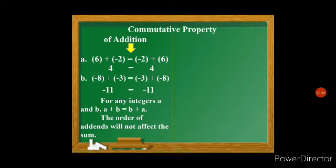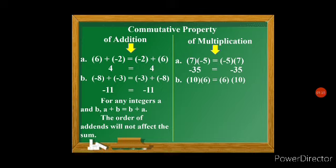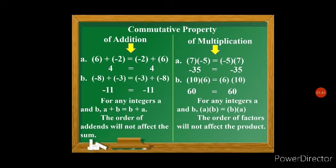For commutative property of multiplication: 7 times negative 5 equals negative 5 times 7, both equal negative 35. Note that when multiplying two integers with unlike signs, the answer is negative. And positive 10 times positive 6 equals 6 times 10, both equal 60, since both are positive. For any integers a and b, a times b equals b times a — the order of factors does not affect the product.